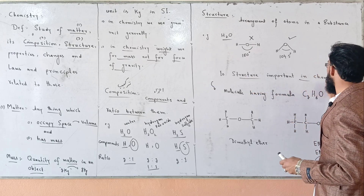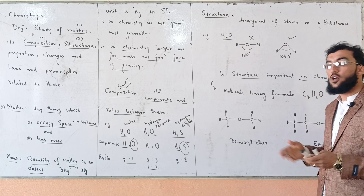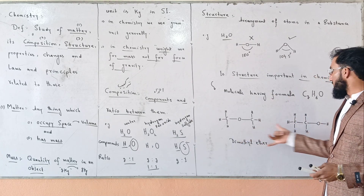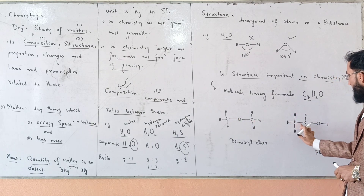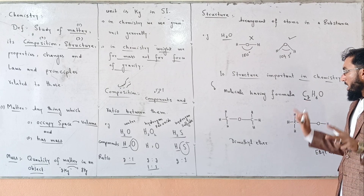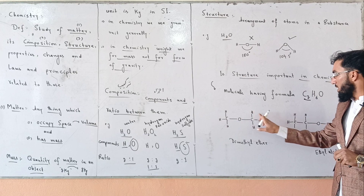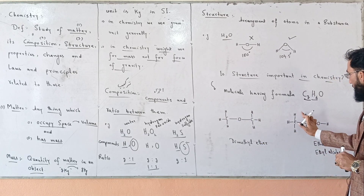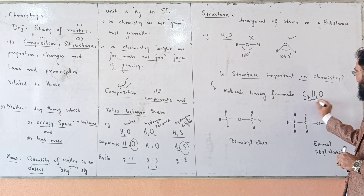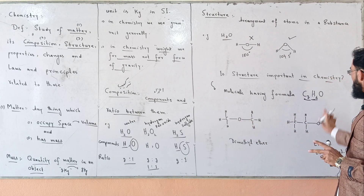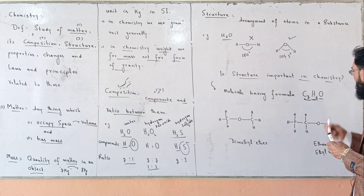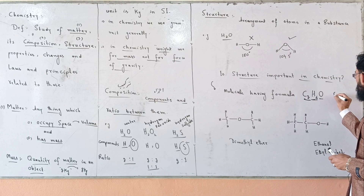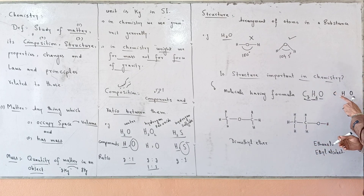Structure is important in chemistry. The molecular formula shows the components — carbon, hydrogen, and oxygen — and their ratio. The composition gives the components and ratio, while the structure tells us how those atoms are arranged.